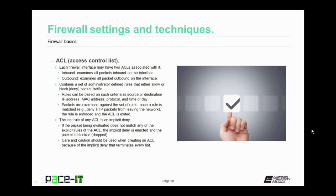First up in firewall settings and techniques is the ACL. Each firewall interface may have two ACLs associated with it: an inbound ACL and an outbound ACL. The inbound ACL examines all packets inbound on that interface, and an outbound ACL examines all packets outbound on that interface. The ACL contains a set of administrator-defined rules that either allow or deny packet traffic. Rules can be based on criteria such as source or destination IP address, MAC address, protocol, and time of day.